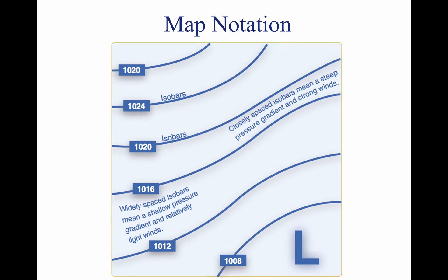Isobars are similar to contour lines on a topographic map that indicate terrain altitudes and slope steepness. For example, isobars that are closely spaced indicate a steep wind gradient and strong winds prevail. Shallow gradients, on the other hand, are represented by isobars that are spaced far apart and are indicative of light winds.